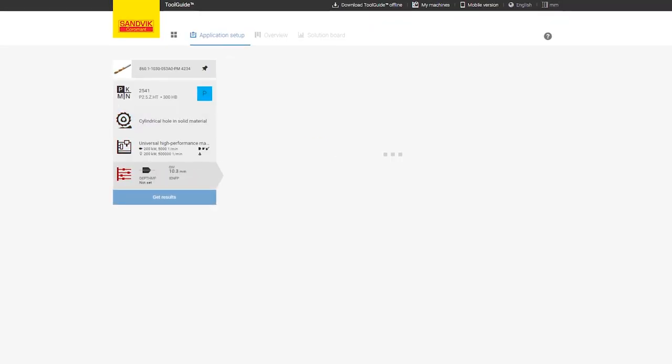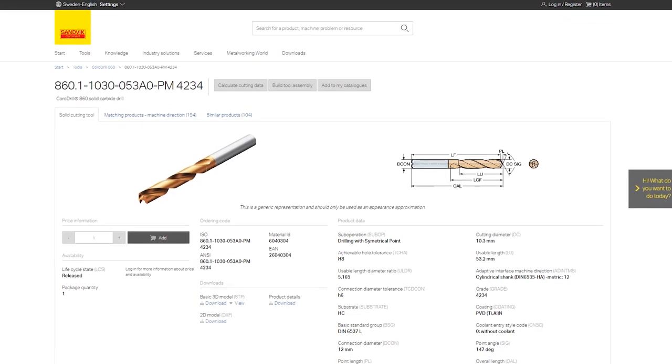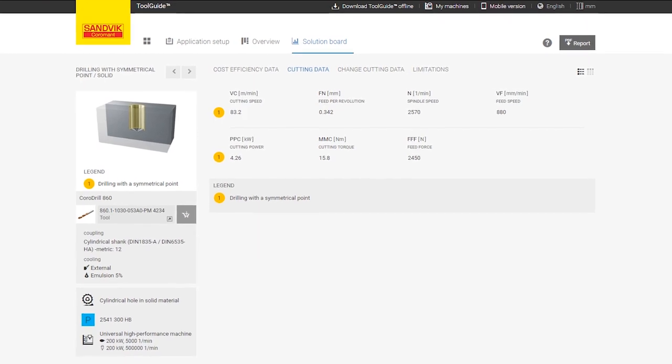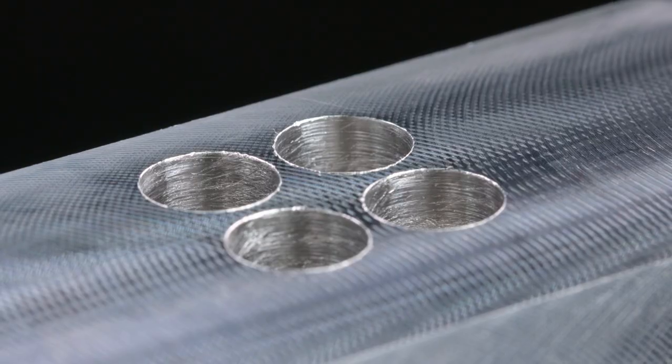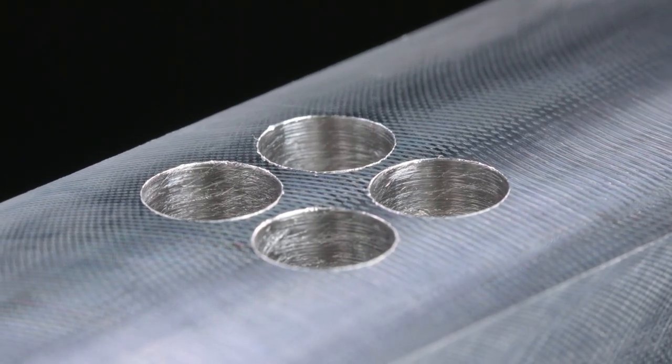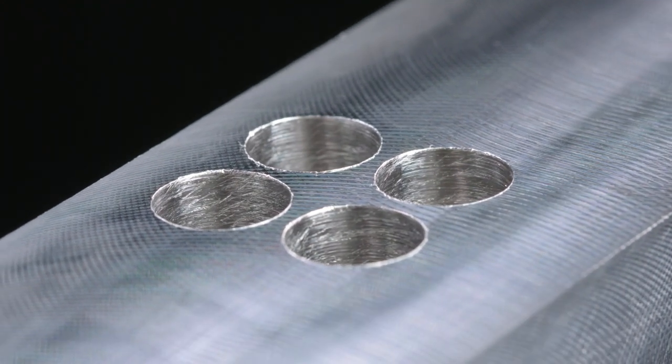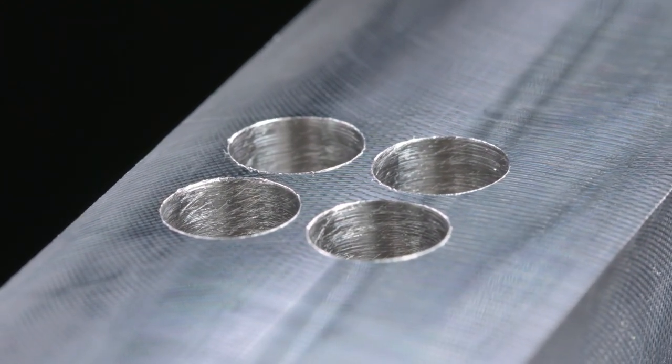The workpiece material, choice of drill, coolant pressure and volume, and cutting data are all important considerations. Chip jamming can cause radial movement of the drill and affect hole quality, drill life, and reliability.